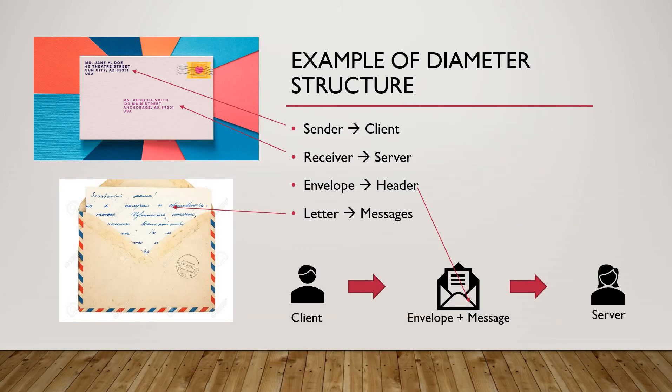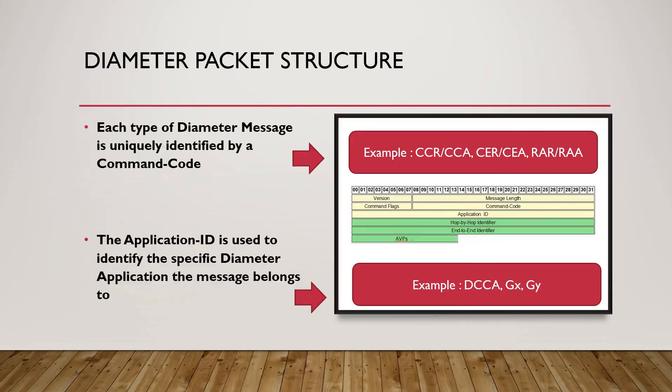On the envelope itself we can know who it is addressing from, which country is the origin, who is the sender, and then we come to the message whether it is related to us or not. Similarly diameter structure is also like that. We have a client, we have a server, we have an envelope which we say as a header. The header will contain everything like diameter protocol version, application ID, the flags, and the actual message is inside that AVP.